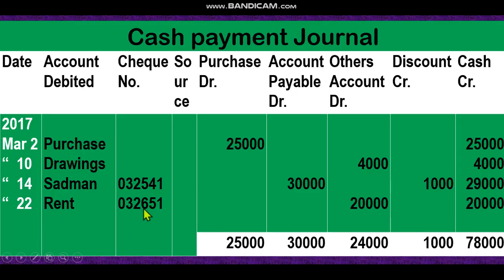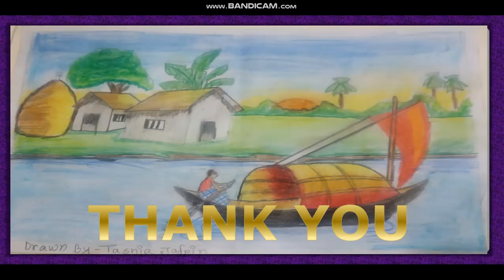Shop rent 25,000 paid by check — we paid rent, so rent account. It is not purchase and not accounts payable, so others account is debited and cash account decreases. This completes the cash payment journal. If you face any confusion you can discuss with me through messenger or WhatsApp. Stay home and stay safe.